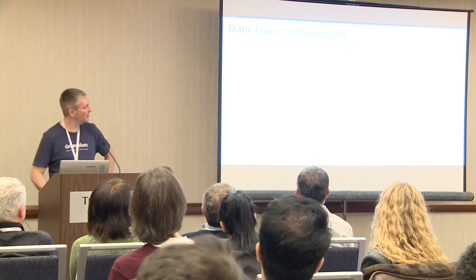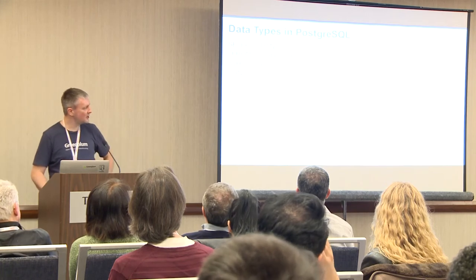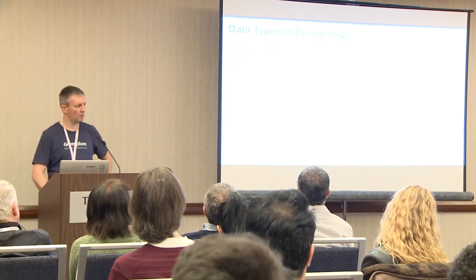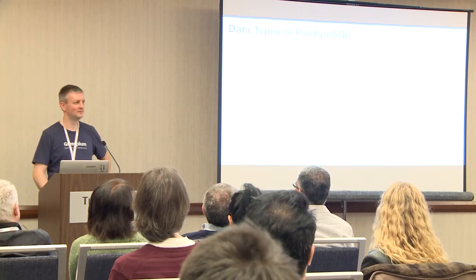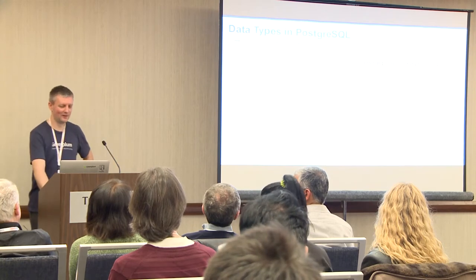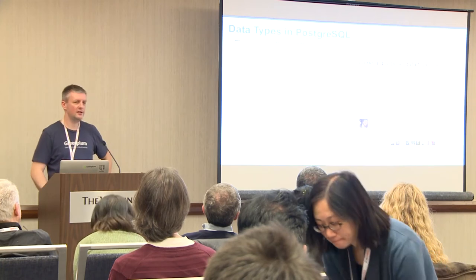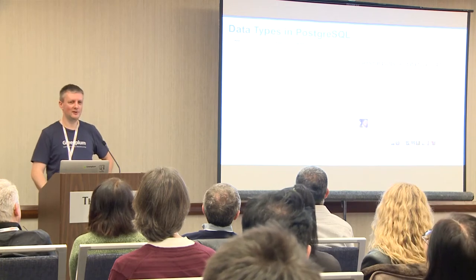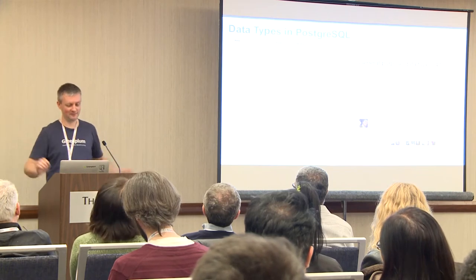Luckily, we have some nice documentation from Postgres — that's a long list of data types you will see in every Postgres database. In the documentation we'll find this list: it's still 41 data types which come with every Postgres database. We're not going to talk about each and every one — I understand I'm between you and the afternoon party, so let's make it quick.